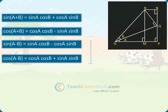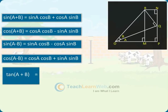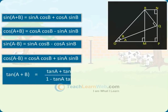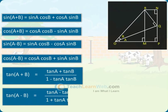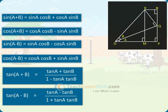tan(A+B) equals tanA plus tanB divided by 1 minus tanA·tanB. tan(A−B) equals tanA minus tanB divided by 1 plus tanA·tanB.